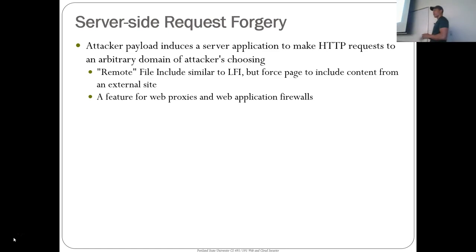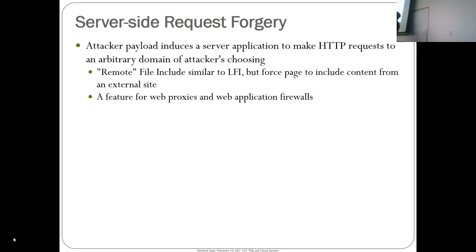This is actually a feature in a lot of things, like web proxies — that's what you want a web proxy to do: here's a URL, get it for me. Another feature is web application firewalls. If you're filtering traffic, say Portland State is filtering all web traffic going out to the internet, the firewall tries to look at the request, retrieve some of the content, and then either allow or deny that request.